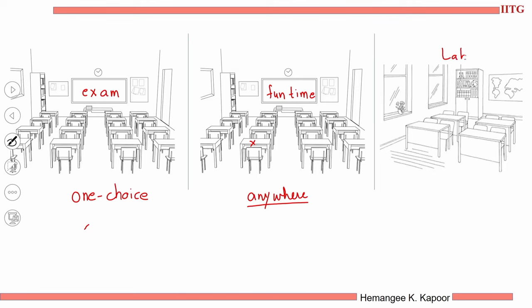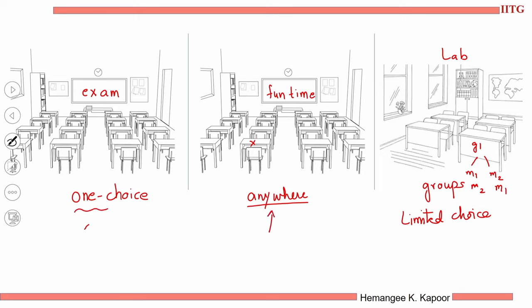The third scenario is a lab assignment to be done in groups. You have been given the lab assignment to be done in groups and it is expected that group members sit together. It does not matter where each member sits — member 1 and member 2 can sit in any order on the two chairs assigned to their group. So you have limited choices: not a strict single choice, but also not full freedom to sit anywhere.